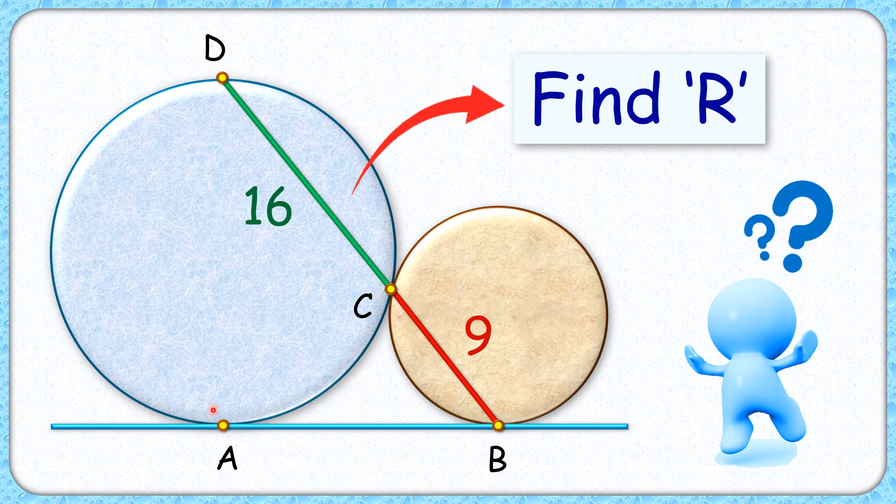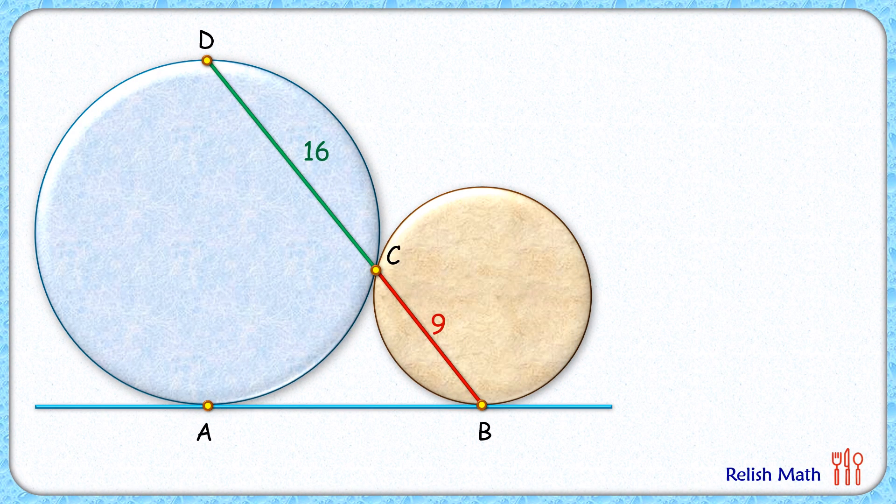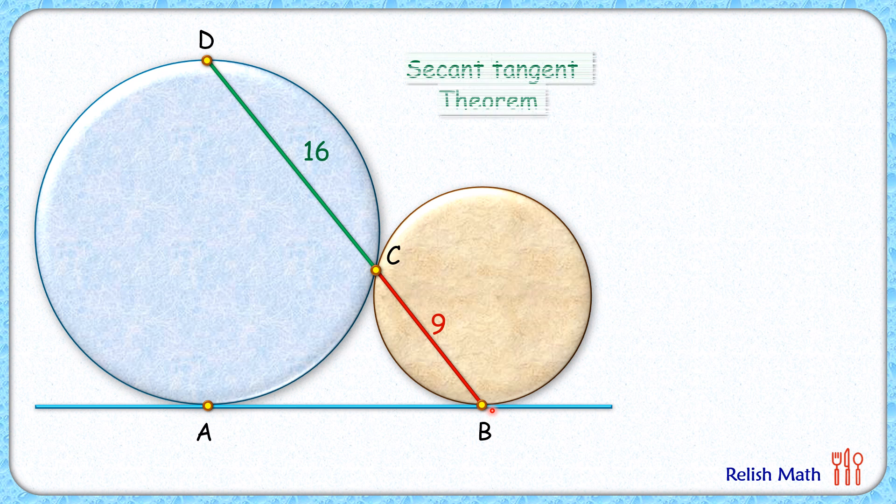Let's check the solution. With respect to this blue circle, from point B we have BA as tangent and BD as secant. So applying the secant-tangent theorem, we get BA² = BC × BD. Here the length BC is 9 centimeters and BD is 9 plus 16, or 25 centimeters. Putting these values and solving, we get length BA as 15 centimeters.